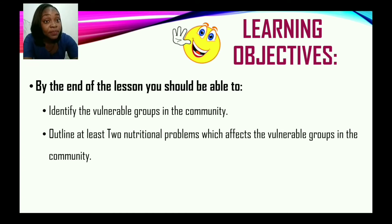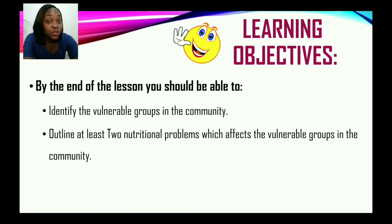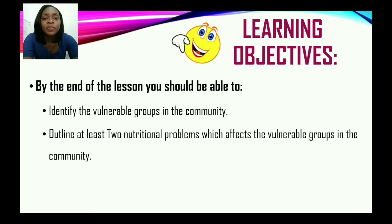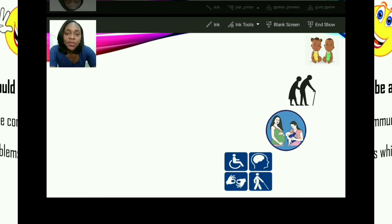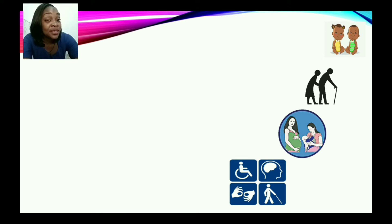Based on the description of vulnerable groups — persons more prone to developing nutrition-related disorders — who are the groups in the community that their present situation makes vulnerable? Looking at four images, we can identify infants, toddlers, the elderly, pregnant and lactating women, and persons who are specially abled.